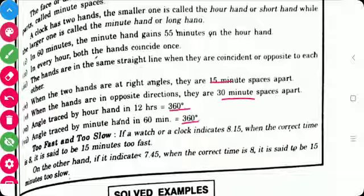And too fast and too slow means, if a watch or clock indicates 8:15 when the correct time is 8, it is said to be 15 minutes too fast. On the other hand, if it indicates 7:45 when the correct time is 8, then it is said to be 15 minutes too slow.